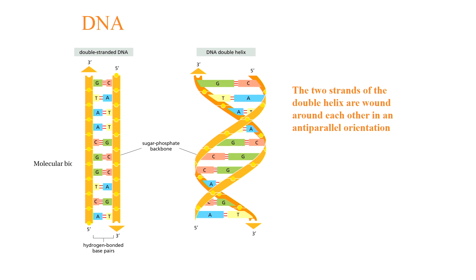A DNA molecule, or deoxyribonucleic acid, consists of two long polynucleotide chains composed of four types of nucleotide subunits. Each of these chains is known as a DNA strand. All DNA molecules are double-stranded, and the two chains are antiparallel to each other. Hydrogen bonds between the base positions of the nucleotides hold the two chains together.